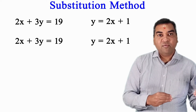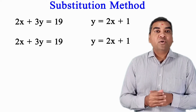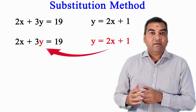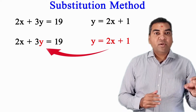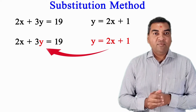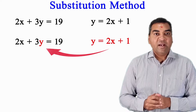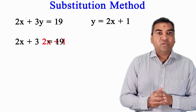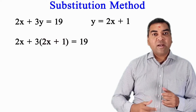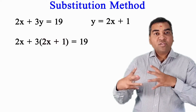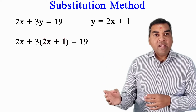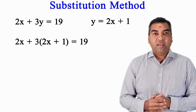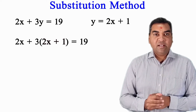So that value of y — which is 2x plus 1 — I can substitute into the first equation. My first equation, 2x plus 3y equal to 19, will become 2x plus 3 times bracket 2x plus 1, equal to 19. I am substituting the value of y into the other equation — that is why this is called the substitution method.